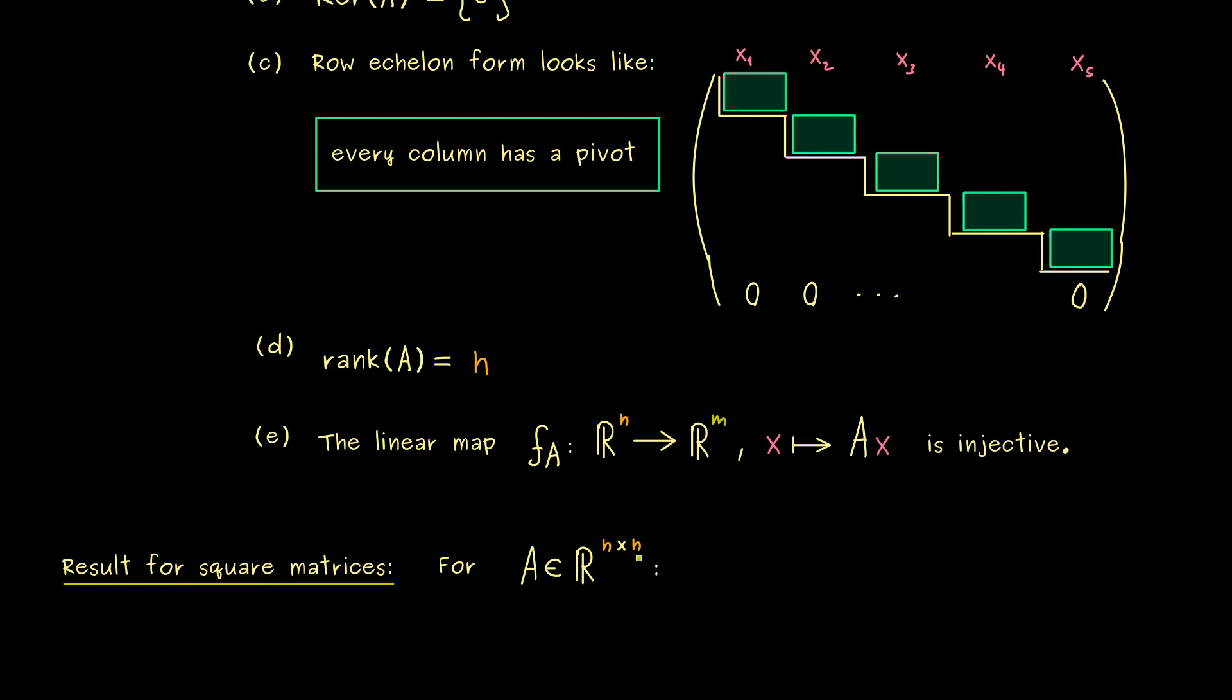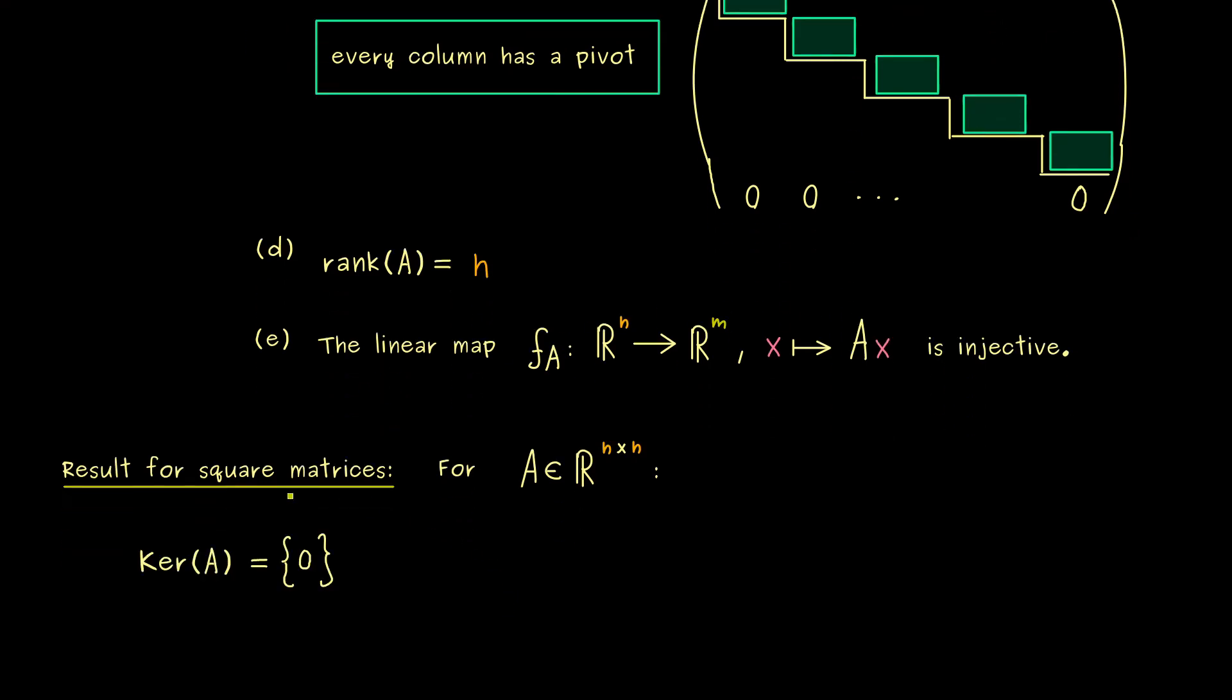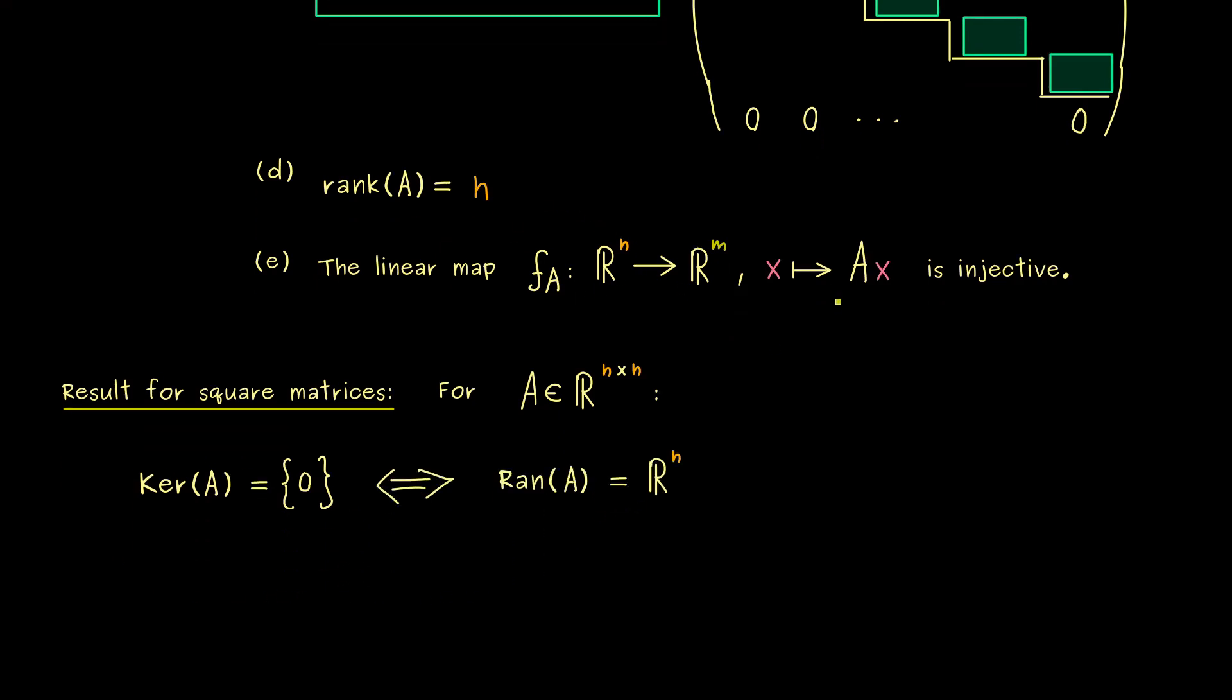Indeed, if we have an n×n matrix, we can look at the row echelon form and we see everything gets much simpler then. So for example, kernel being trivial now means that we hit the whole space on the right-hand side. So the range of A is equal to the whole space. Or in other words, injectivity is equivalent to surjectivity. Hence you see, the existence and the uniqueness of solutions is connected for square matrices.